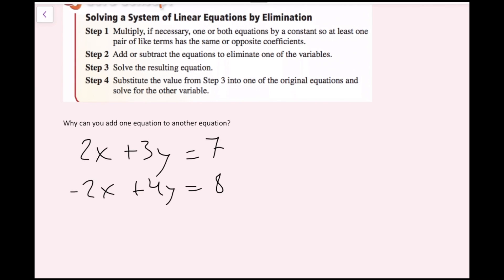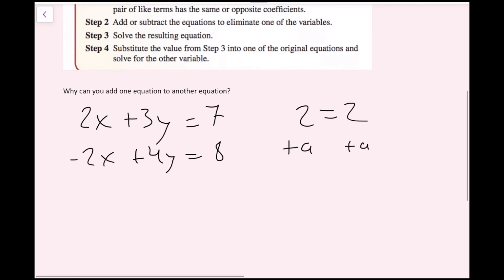If I have just an example equation like 2 equals 2 — this is a true statement. And let's say I want to add something on both sides. I can do that as long as it's the same thing I add on both sides. So let's say I add 'a' — if I add a on the left and add a on the right, I get 2 plus a equals 2 plus a.